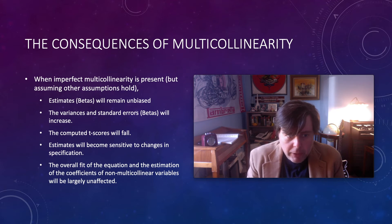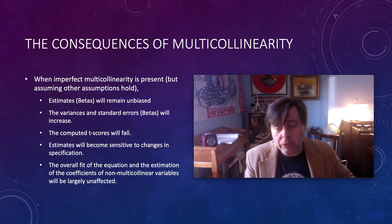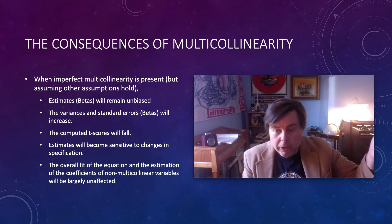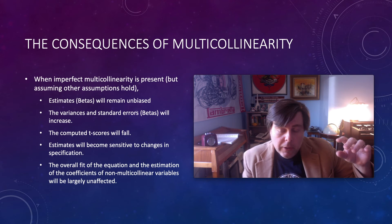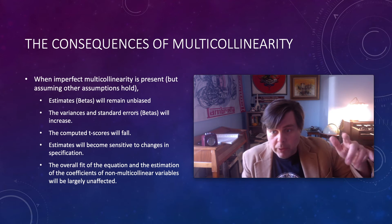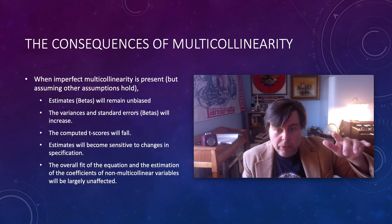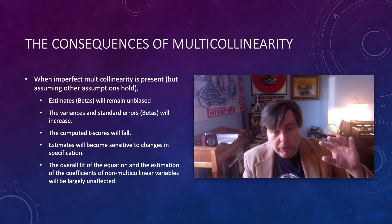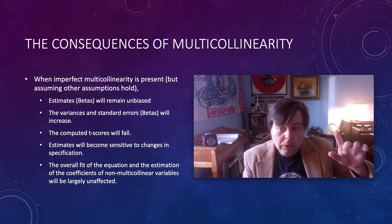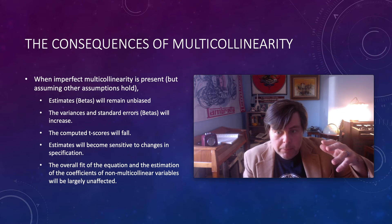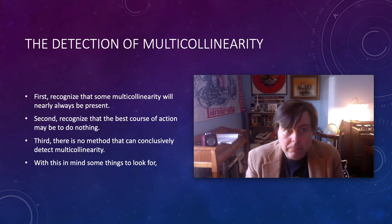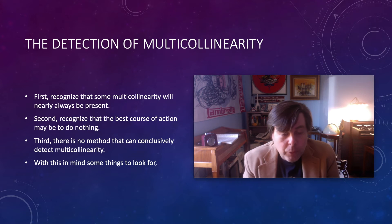Also, practically, our estimates become more sensitive to changes in specification. As we saw in the last video with omitted variables, our estimated betas bounce around a lot when we change the model slightly. We'll notice that here too — with multicollinearity, small changes in specifications to our model have relatively large impacts on our estimated coefficients.